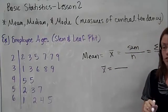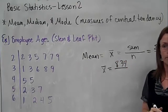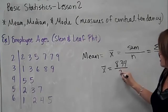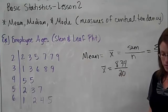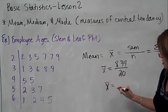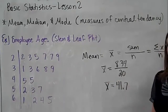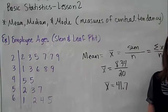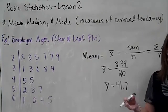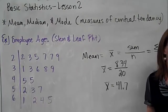To double-check: your total should be 834. N was 20 employees, so you divide 834 by 20. The average age is 41.7. Keep in mind — don't round too much. Give all your statistics answers to at least one, two, or three decimal places. Don't round this to 42; leave it as 41.7.